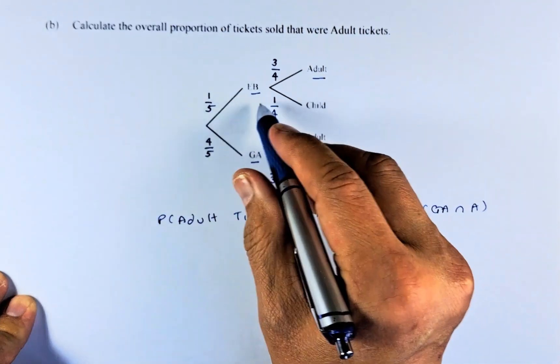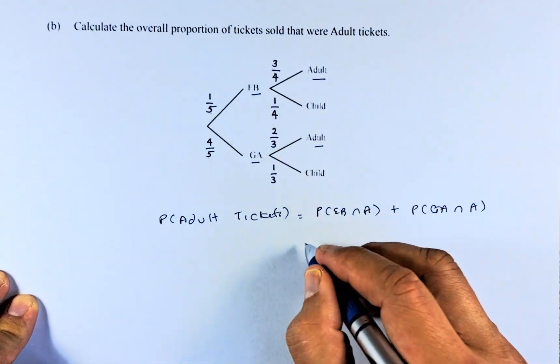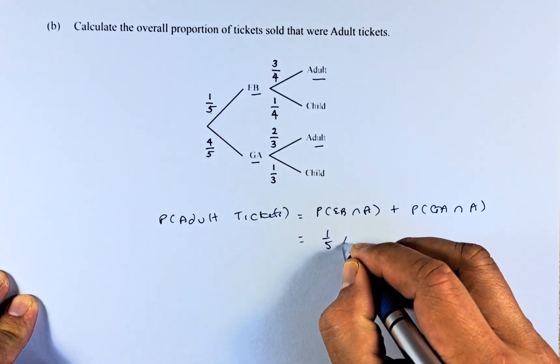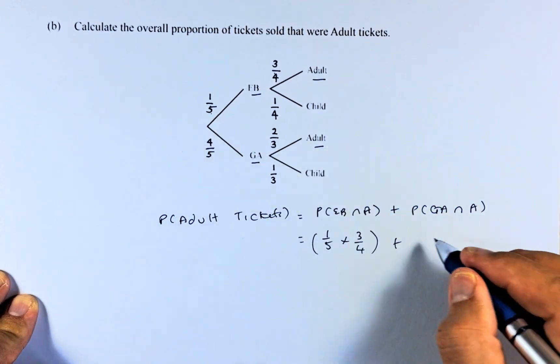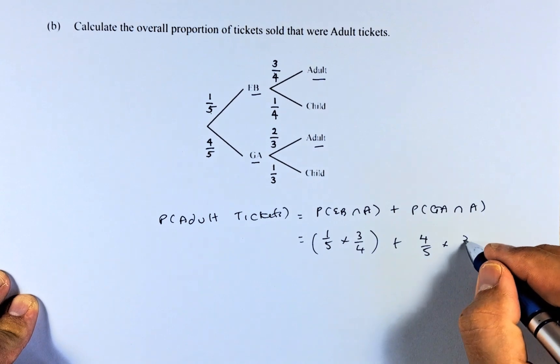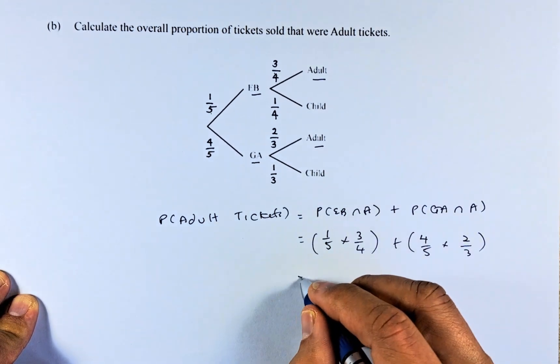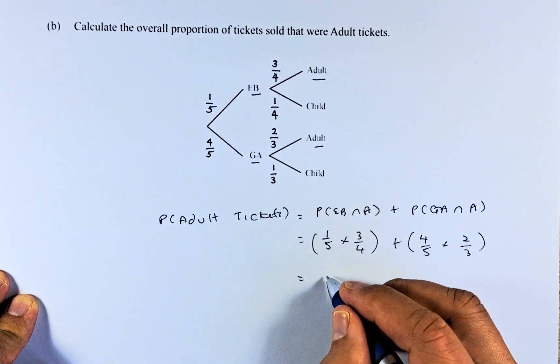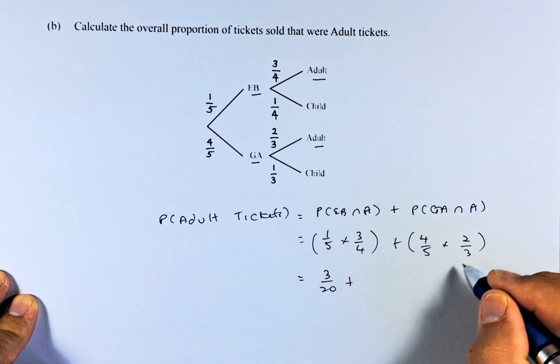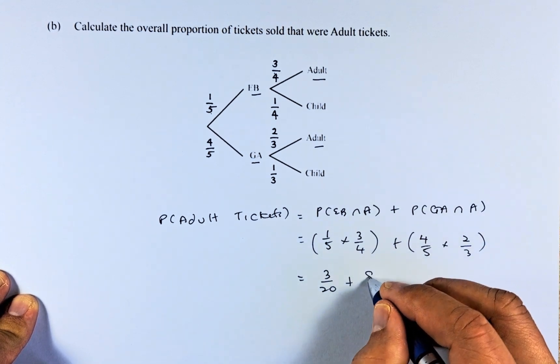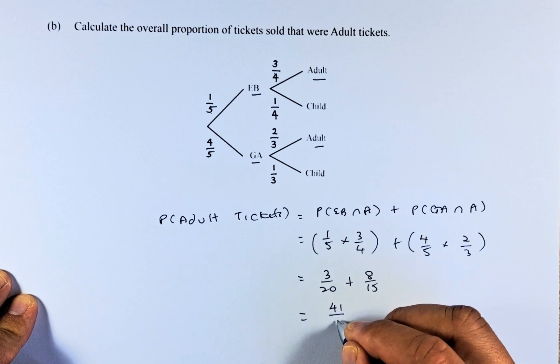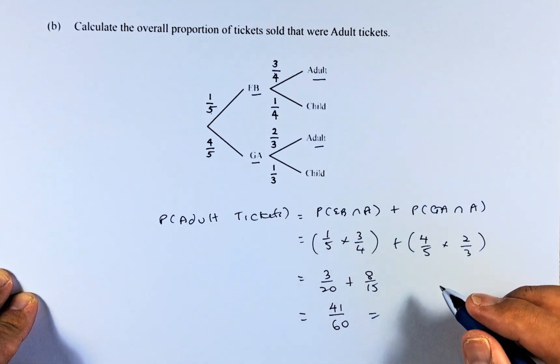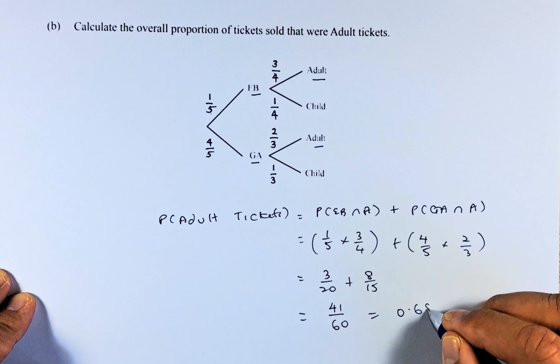So to calculate probability of early bird and adult, we just take one-fifth times three-quarters. One-fifth times three-quarters. And then to get probability of general admission and adult is going to be four-fifths multiplied by two-thirds. So use the calculator. One-fifth times three-quarters is going to be three over twenty. And four-fifths times two-thirds is going to be eight over fifteen. Put in a calculator and the answer should be equals to forty-one over sixty, or you simplify, the decimal is going to be 0.6833.